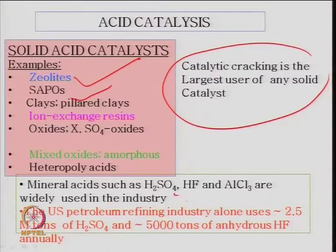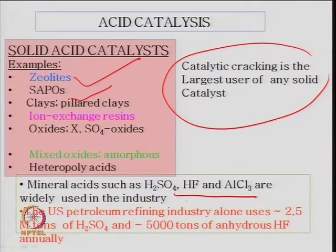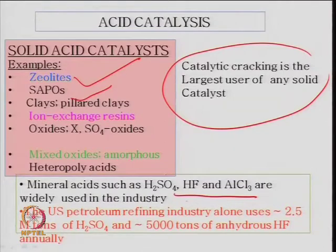Sulfuric acid, hydrofluoric acid, and aluminum chloride are used in alkylation — HF alkylation is the commercial process. For alkylation or polymerization, sulfuric acid and H₃PO₄ are also used. These are very strong acids, so material of construction may be an issue. In alkylation you mix isobutane and get isooctane — polymer gasoline — and HF alkylation is used for alkylated gasoline. AlCl₃ provides Lewis acidity and is used for Friedel-Crafts reaction.